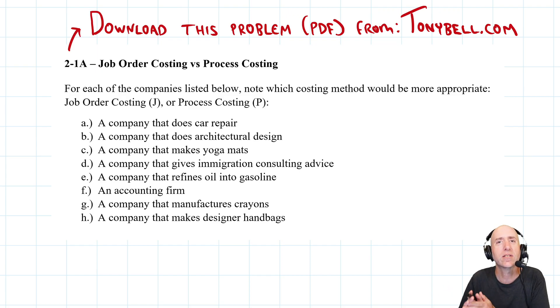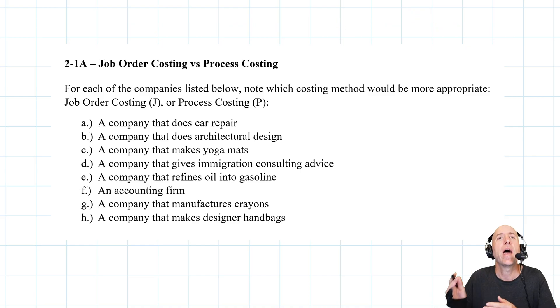Job order costing is for when every customer is a little bit different. Everybody has custom needs and we make the product for them to order. They tell us what they want and we make the product for them. In those cases we have to use job order costing, even though it's slower and less efficient, because every customer is different. They use different amounts of labor hours, different amounts of materials. Every customer needs tweaks just for them.